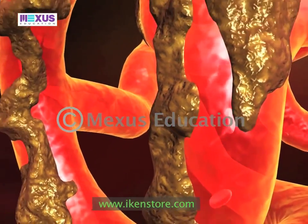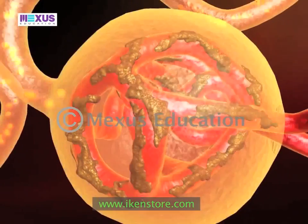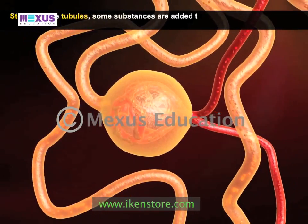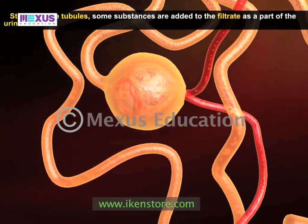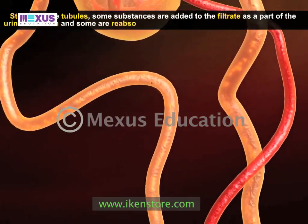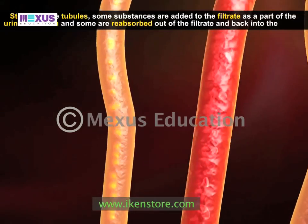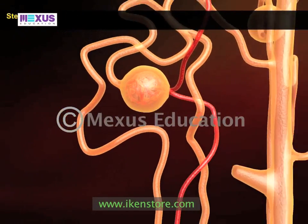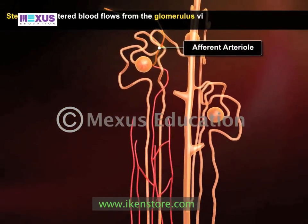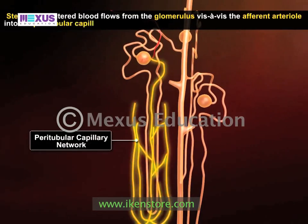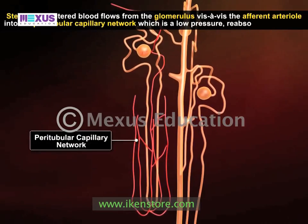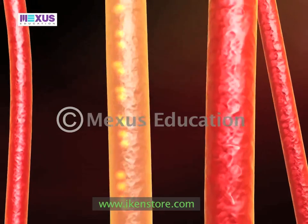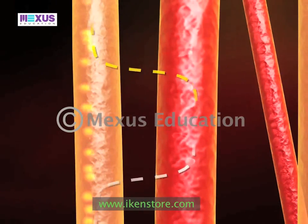The filtrate then diffuses across Bowman's space and enters the tubule system of the nephrons. Blood filtered from the glomerulus via the afferent arteriole flows into the peritubular capillary network, which is a low-pressure reabsorptive system surrounding all portions of the tubules. This arrangement permits rapid movement of solutes and water between the fluid and the tubule lumen.